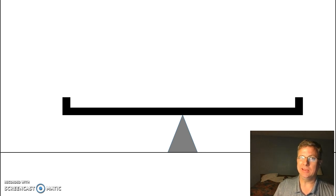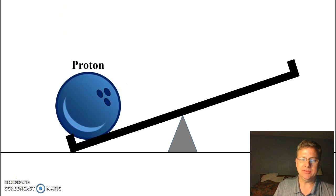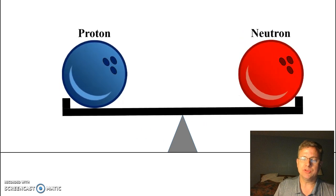We're also going to try and take a look at some relative sizes of things in the atom. So what I've got up here on the screen is sort of a teeter-totter balance, and if I bring down a bowling ball and we're going to say that bowling ball represents a proton, obviously it's on one side and there's nothing over there so it tips in that direction. If I bring in a neutron, notice that the neutron and the proton are about the same size and they're going to balance each other out.